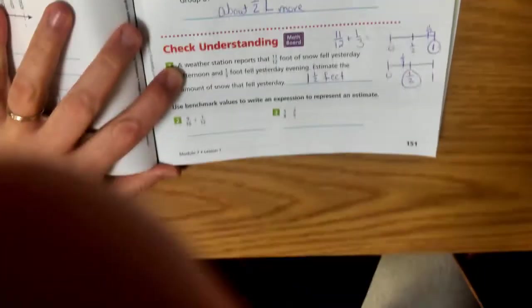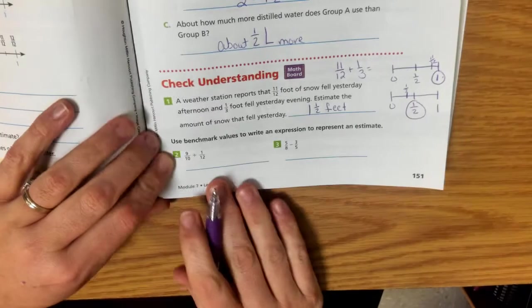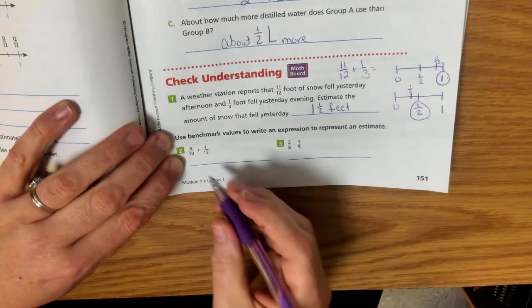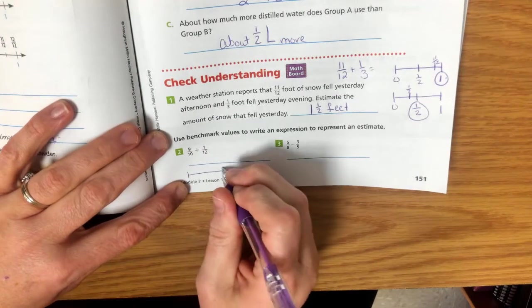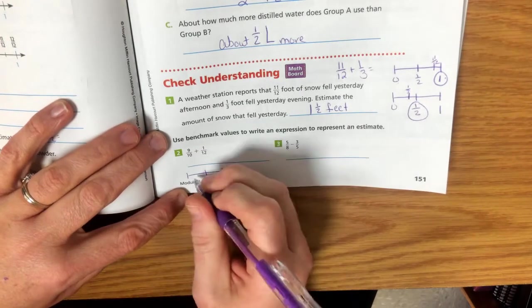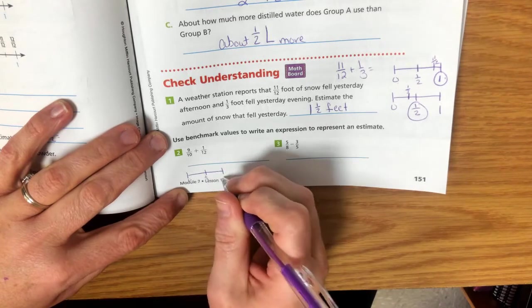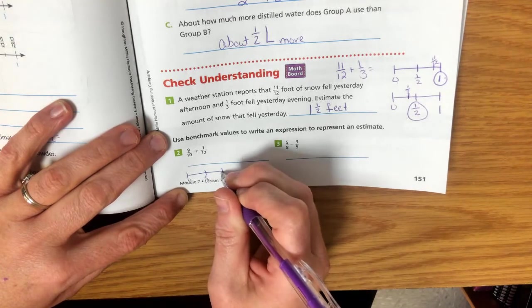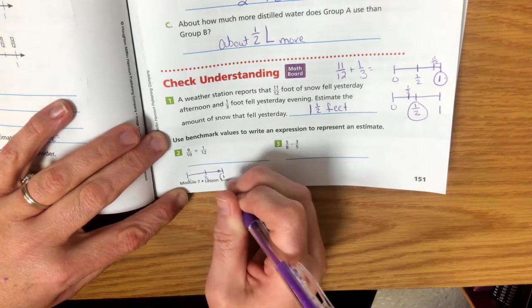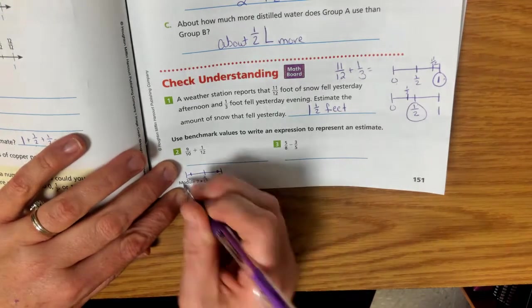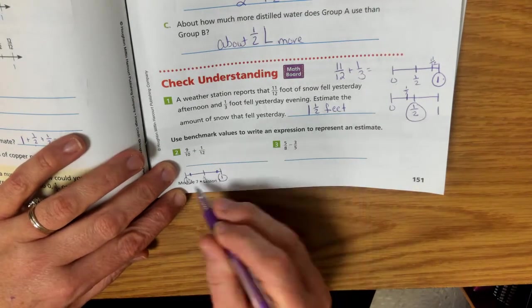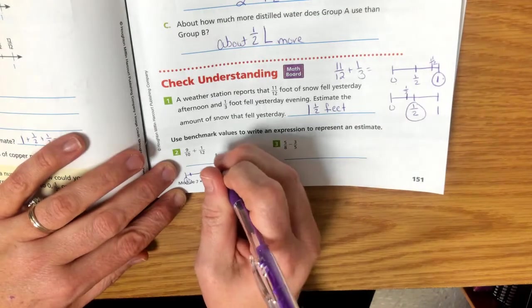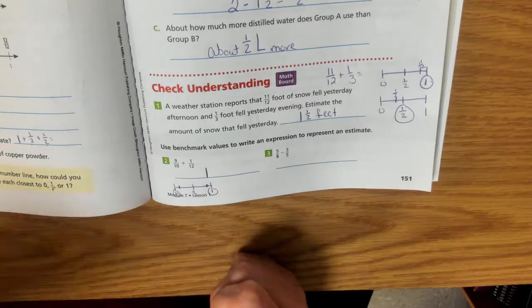Okay, 9 tenths plus 1 twelfth. Well, 9 tenths on my number line is almost 1 whole, right? Yep, here somewhere. So it's almost 1 whole. 1 twelfth is way down here. That's almost 0. So 1 plus 0 is 1. So it's closest to 1.